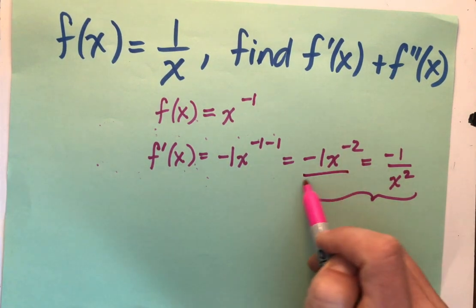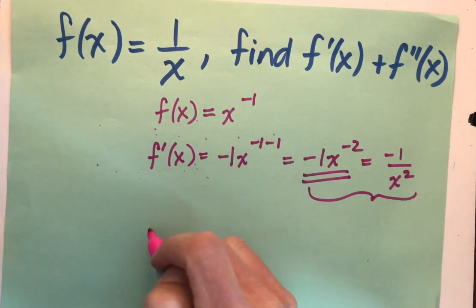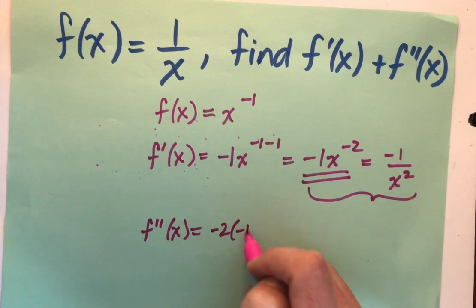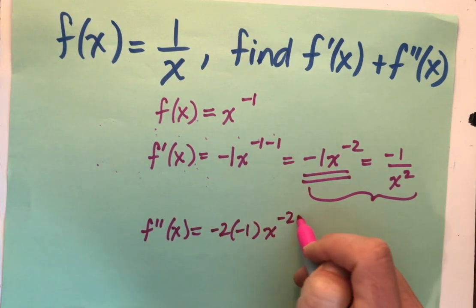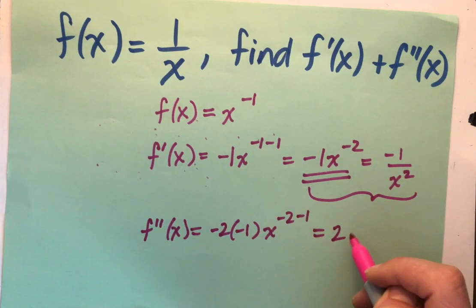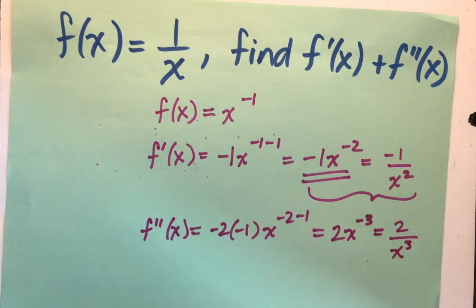To take the second derivative, I'm going to focus on the form that's in exponential notation so that I can apply my shortcut. f double prime of x. I'm going to bring that negative 2 down, so I've got negative 2 times negative 1 x to the negative 2 minus 1. We simplify that. Negative 2 times negative 1 gives me a positive 2 x to the negative 3rd power, which I could rewrite as, that's right, 2 over x cubed.